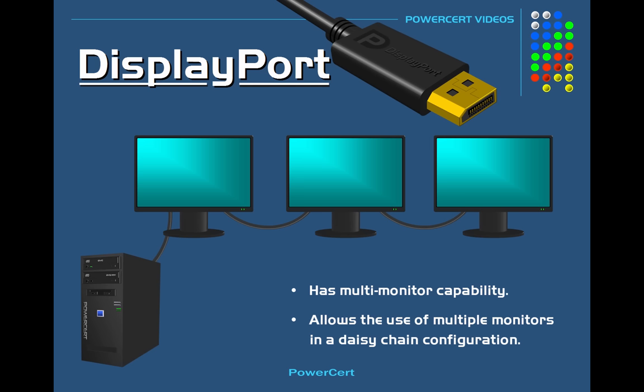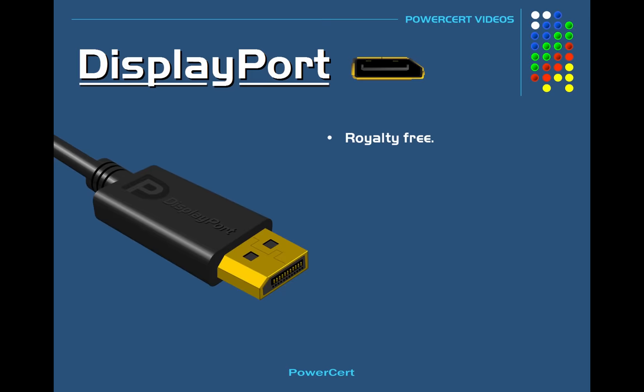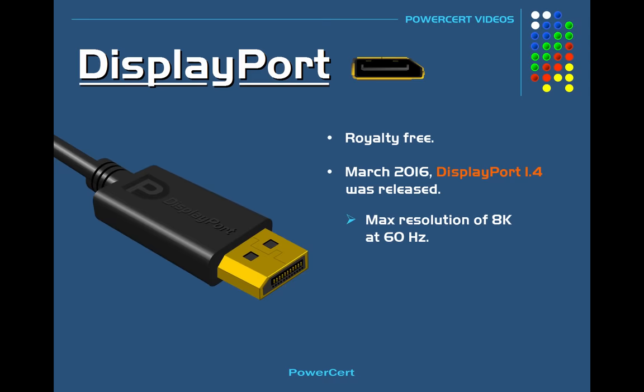This is why the DisplayPort is more focused for computer use than for other equipment such as televisions. Another advantage DisplayPort has over HDMI is that it has a locking mechanism that keeps the cable locked in place, whereas HDMI does not. Also unlike HDMI, DisplayPort is a royalty-free product. In March of 2016, DisplayPort 1.4 was released, which has a max resolution of 8K at 60 Hz.